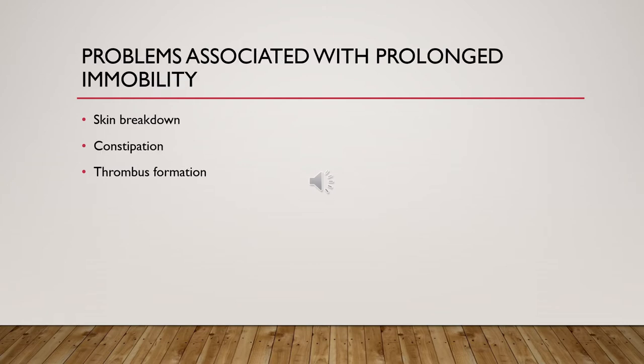Problems associated with prolonged immobility — many of these you can think of off the top of your head. We have problems with skin breakdown, whether it's from the injury itself or from the immobility and decreased activity. We can also have problems with constipation, which can be from the immobility or associated with the medications we use to help control the pain. Thrombus formation becomes a life-threatening event that can occur from immobility.